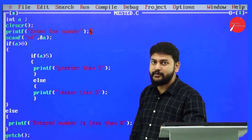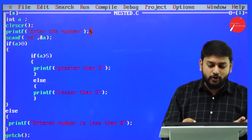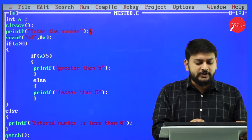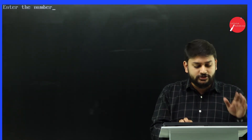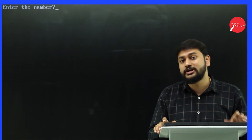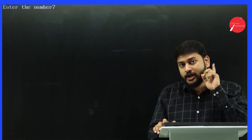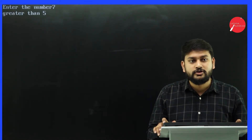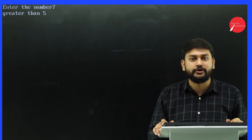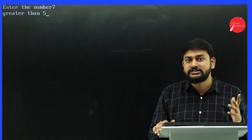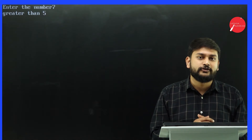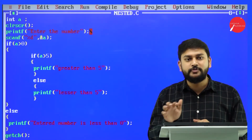Let me run one more time. I enter seven. The output is 'greater than five'. That is the expected output — seven is greater than zero and also greater than five, so the innermost true block executes. This is how nested if is working.